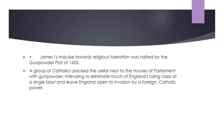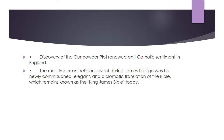James I's impulse towards religious toleration was halted by the Gunpowder Plot of 1605. A group of Catholics packed the cellar next to the Houses of Parliament with gunpowder, intending to eliminate much of England's ruling class at a single blast and leave England open to invasion by a foreign Catholic power. Discovery of the Gunpowder Plot renewed anti-Catholic sentiment in England. The most important religious event during James I's reign was his newly commissioned, elegant and diplomatic translation of the Bible, which remains known as the King James Bible today.